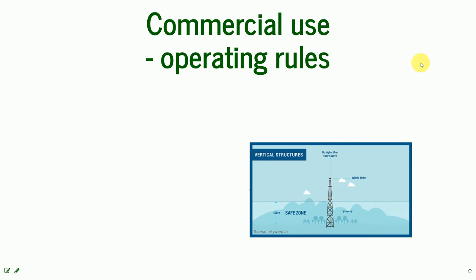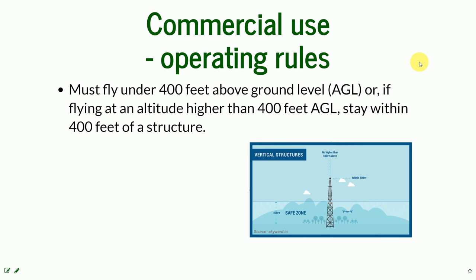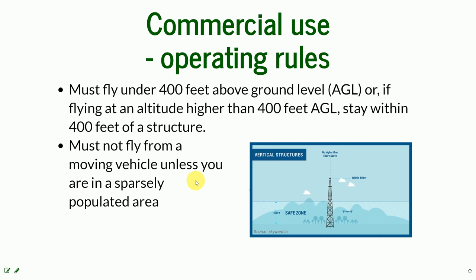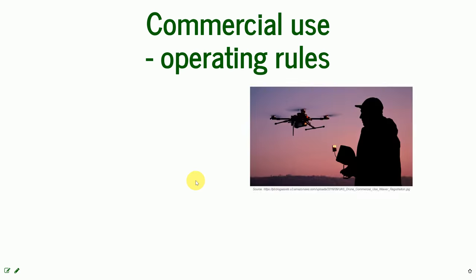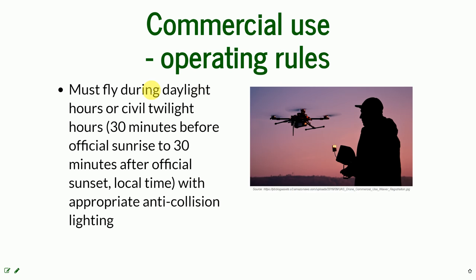The operating rules for commercial use of UAS: they must fly under 400 feet above ground level. Or if flying at a higher altitude, they need to stay within 400 feet of a structure. You cannot fly from a moving vehicle unless you are in a sparsely populated area, and you must fly at or below 100 miles per hour. You also have to fly during daylight hours, or within 30 minutes before official sunrise to 30 minutes after official sunset — called civil twilight hours — but you must have appropriate anti-collision lighting.